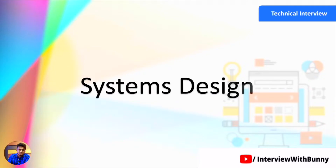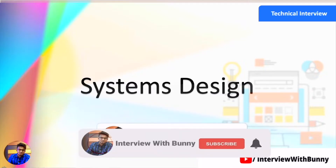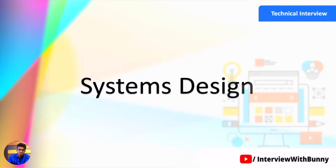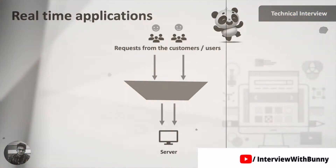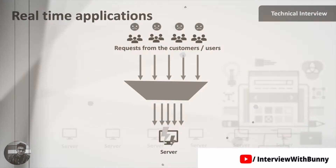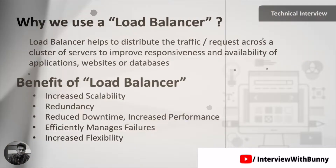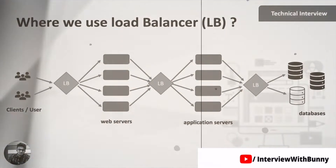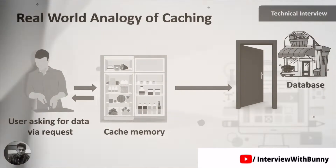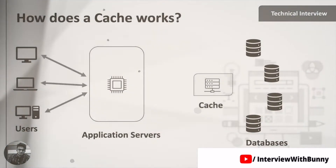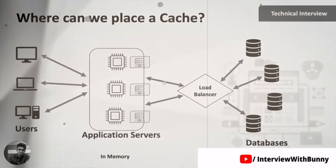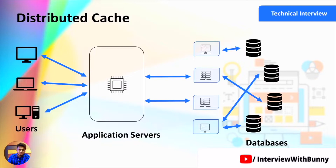Hello guys and welcome back to another video tutorial series on system design. Today's concept is consistent hashing. In our previous video tutorial series on system design, we have discussed in detail some key concepts of distributed systems such as load balancing — what it is, why we need a load balancer, and where we should place one in a distributed system. In our last series, we also discussed caching and how to implement a caching mechanism in a distributed system. If you have not gone through that video yet, I would highly recommend you do so first and come back to this video.